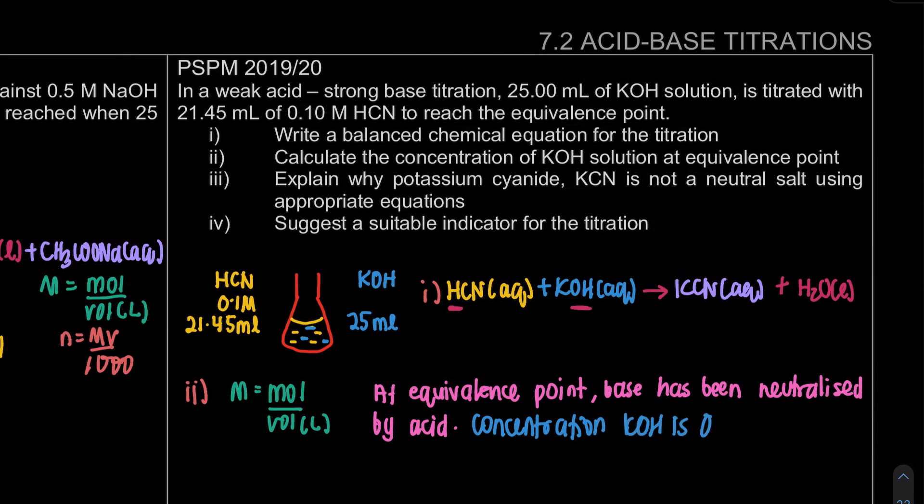So at the end, the concentration will be, the concentration of KOH is zero. Zero molar. So that's the question. This one is tricky. It's actually at equivalent point. Equivalent point is actually base has been neutralized by your acid. All of it has reacted to form our product. There's no concentration left, so we can't find it out.